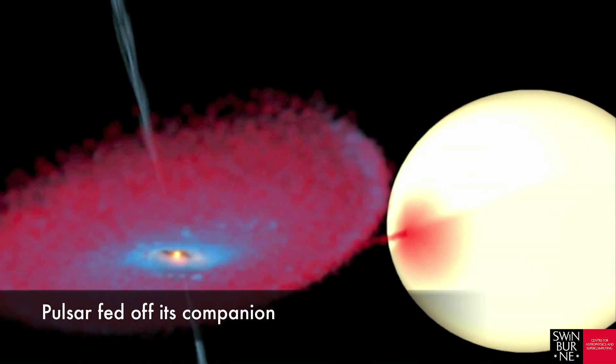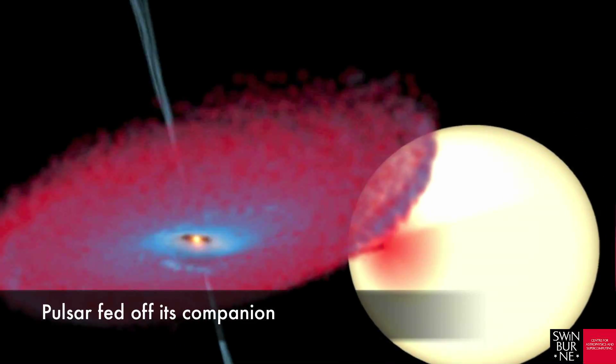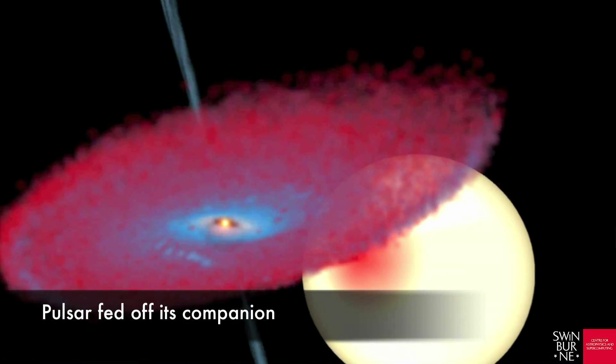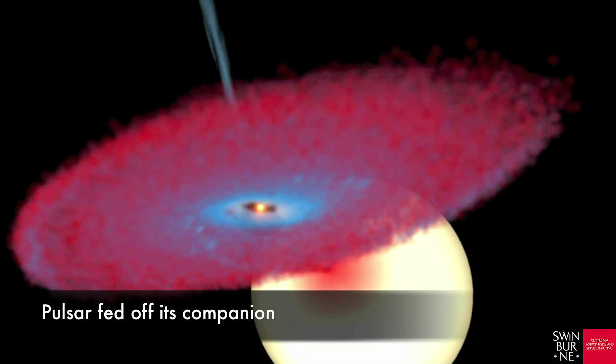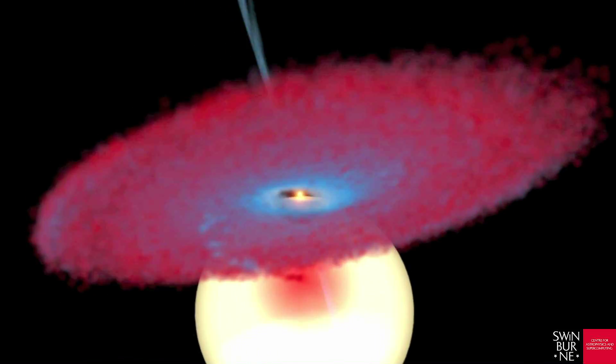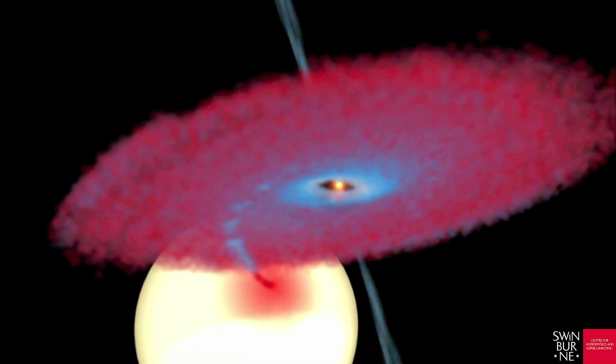The rapid spin of the pulsar tells us that the system once possessed a massive accretion disk as the pulsar stripped matter from its stellar companion. The leftover of this star is what we see today as the planet.